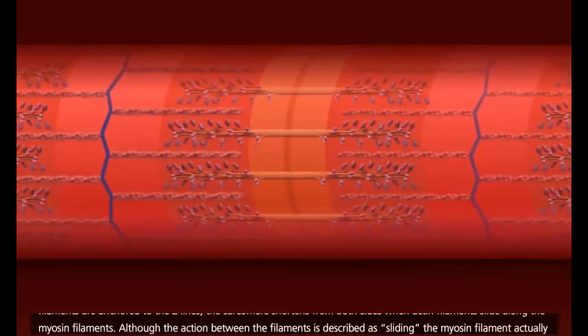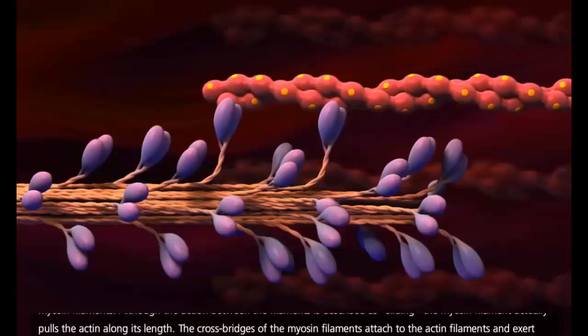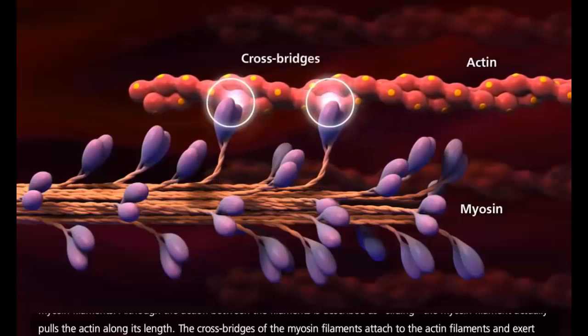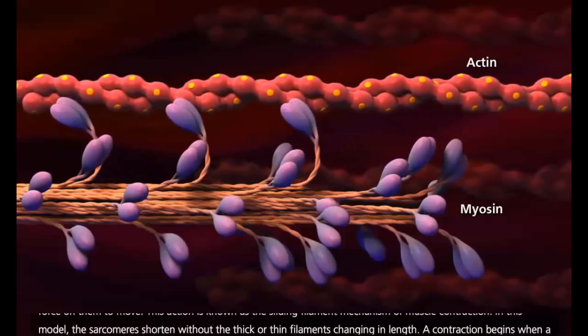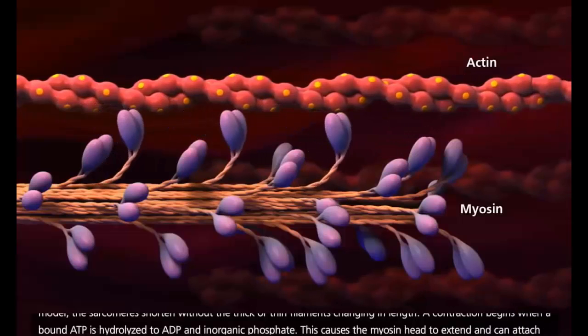Although the action between the filaments is described as sliding, the myosin filament actually pulls the actin along its length. The cross bridges of the myosin filaments attach to the actin filaments and exert force on them to move. This action is known as the sliding filament mechanism of muscle contraction. In this model, the sarcomeres shorten without the thick or thin filaments changing in length.